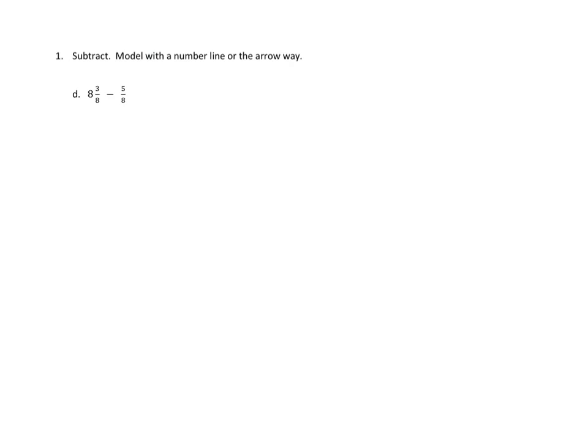Problem number one asks: Subtract. Model with a number line or the arrow way. I think I'm going to do the arrow way this first time. The problem that we're faced with is 8 and 3/8 minus 5/8. So there's a couple things that I notice. One is that I have more 8ths that I'm subtracting than I have 8ths in the original mixed number. I can make some more 8ths, but I'm going to do that through our arrow method.